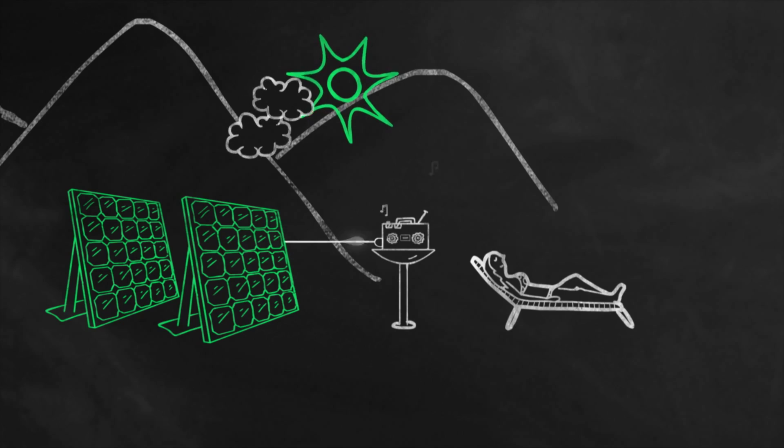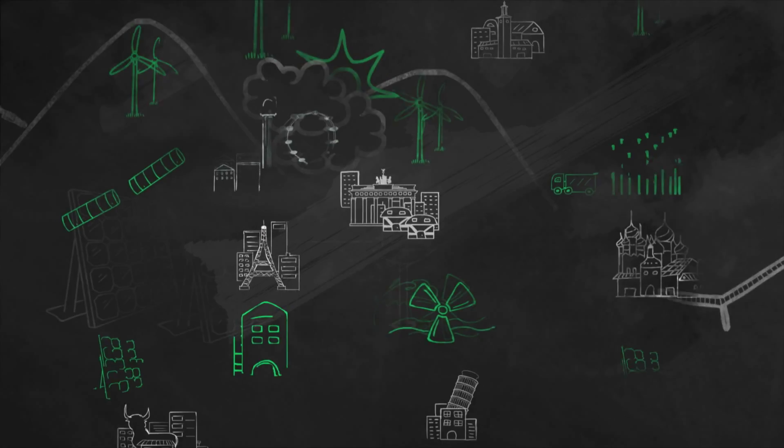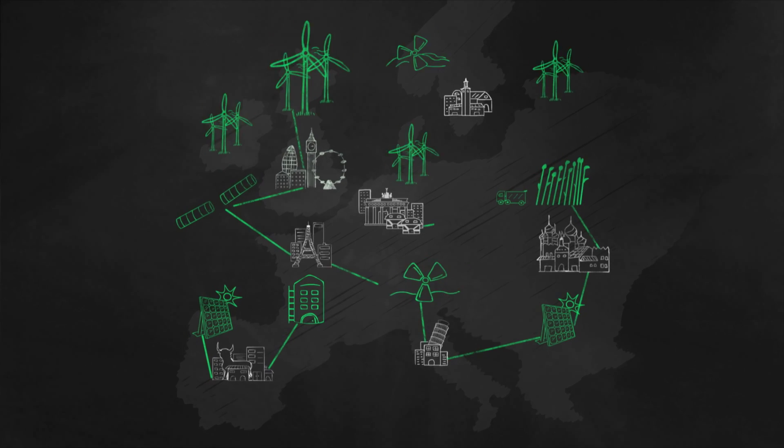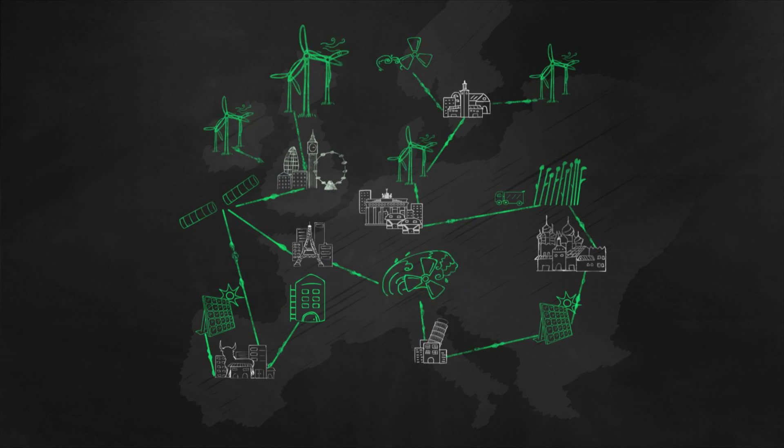We can't decide when the sun will shine. A new energy system needs a new grid, one with super connections that span far enough to reach those remote power sources and turn a variable supply into a constant one.